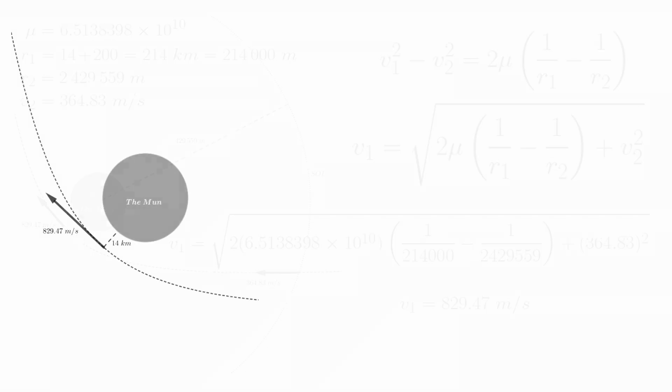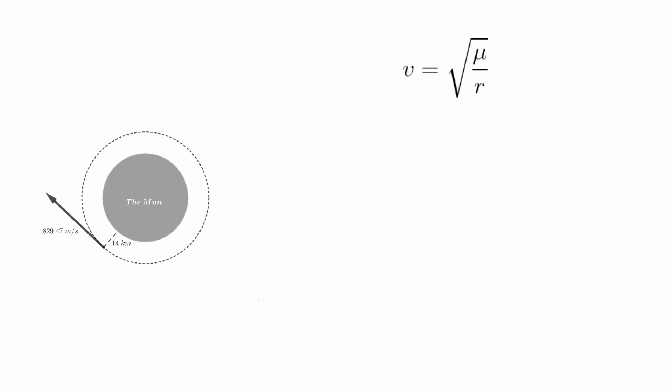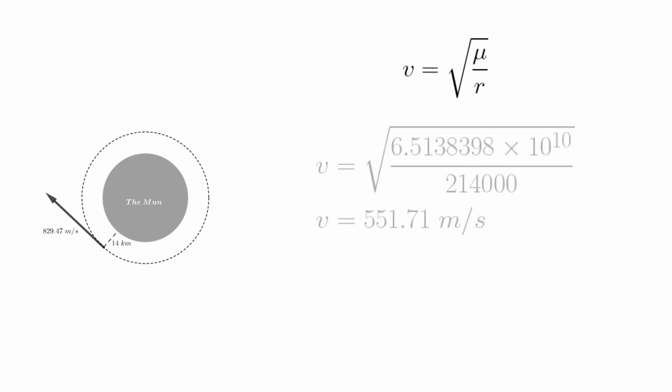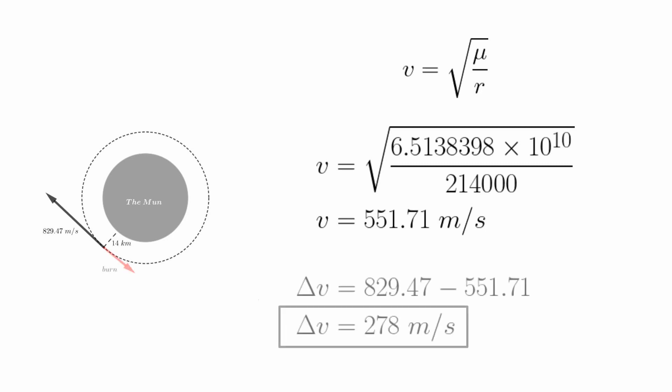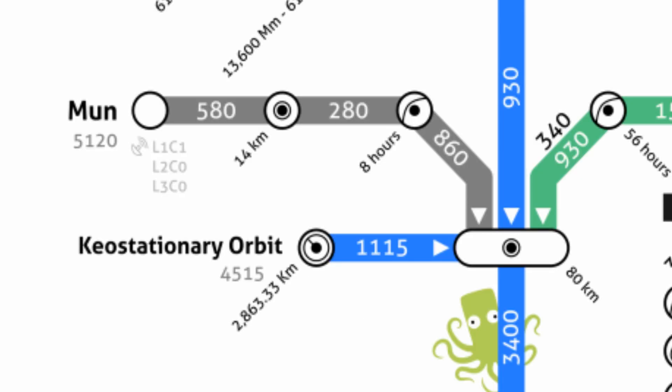We're almost there. We would like to end up in a circular orbit with an altitude of 14 kilometers. The velocity we would need for this is calculated using the circular orbital velocity formula. Sticking in the numbers, we get that we need an orbital velocity of 551.71 meters per second. So clearly we're going too fast — all we have to do is calculate the difference between these two velocities to get how much speed we need to knock off. This gets us 277.76, or 278 meters per second. This is the delta V cost of our moon arc capture, confirming the 280 meters per second from the delta V map.